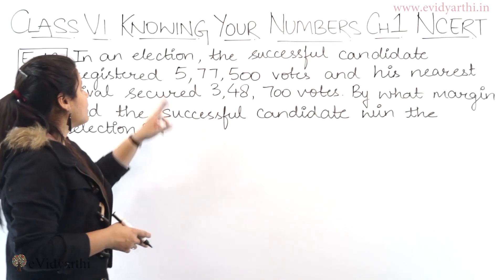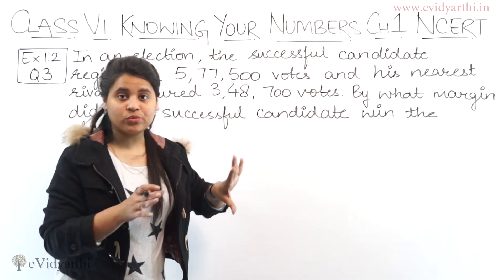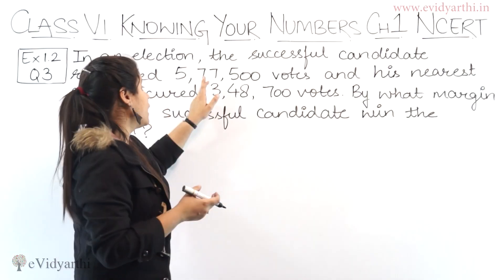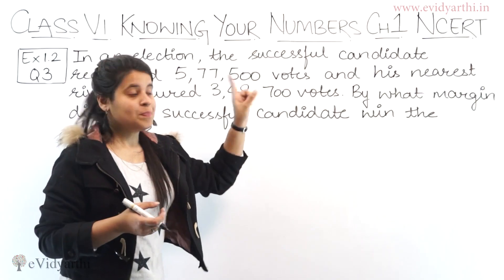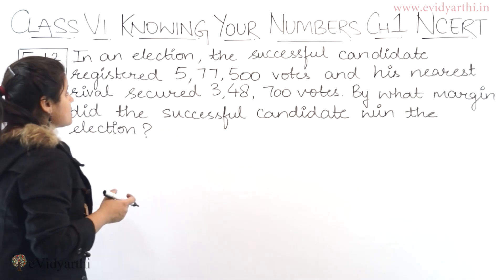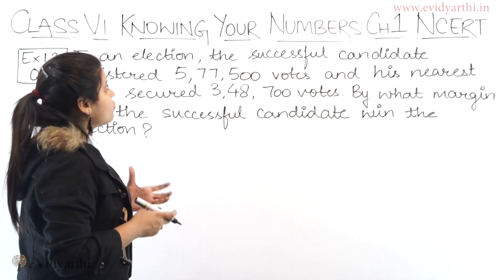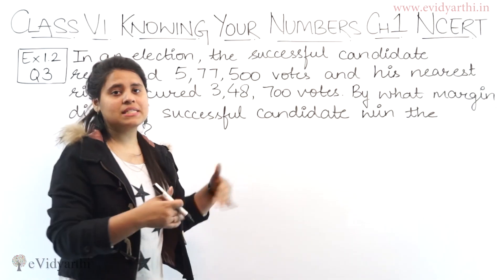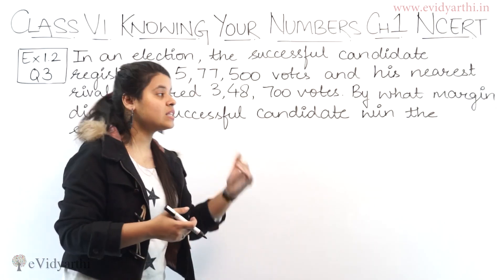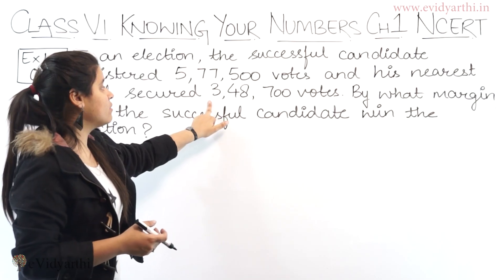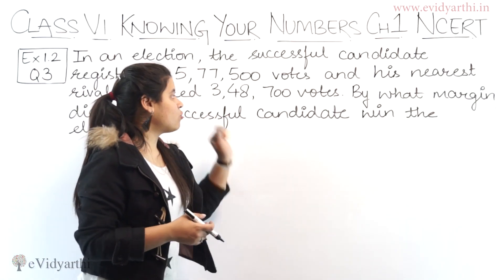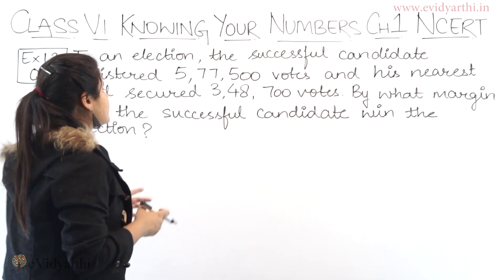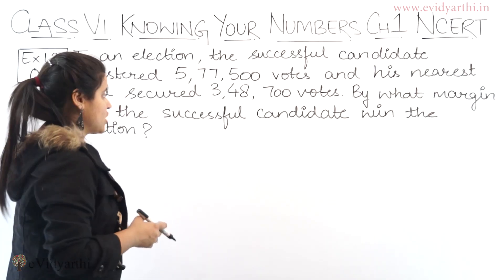The successful candidate means the one who is winning the election. And his nearest rival secured 3,48,700 votes. By what margin did the successful candidate win the election?